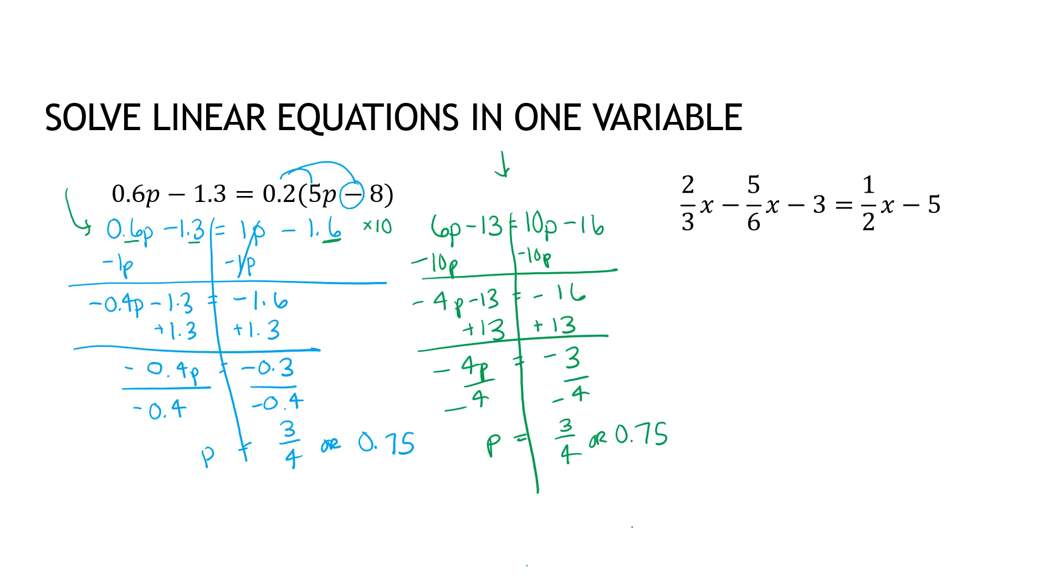I am going to use the strategy on the second one, and the strategy is to find the least common denominator. I'm looking at the numbers 3, 6, and 2 and saying what's the smallest number 3, 6, and 2 will go into. Hopefully it's obvious that that number is 6.